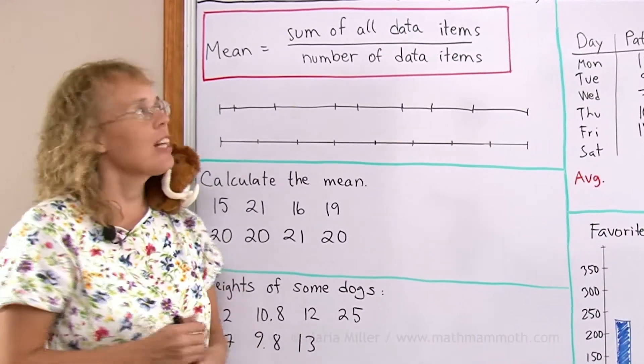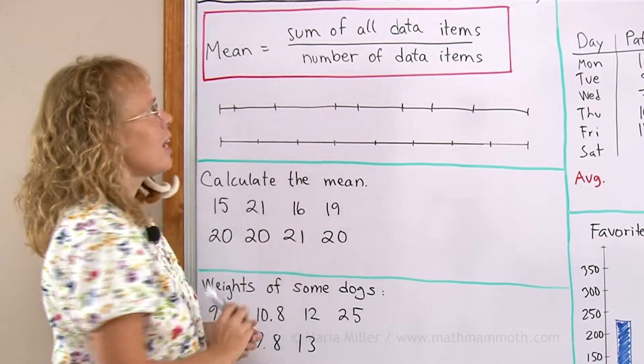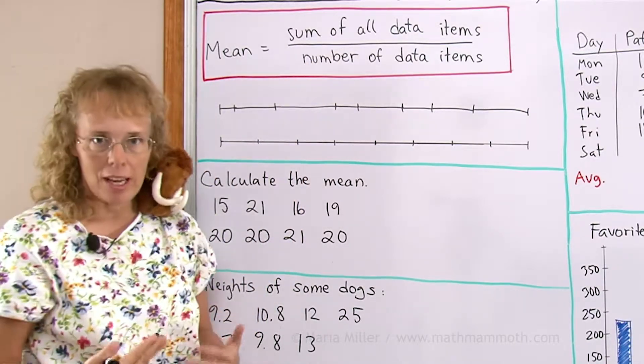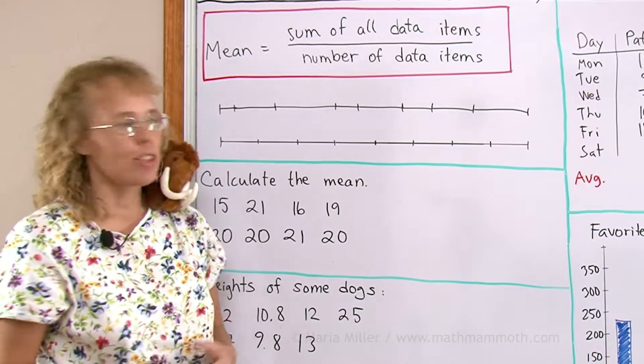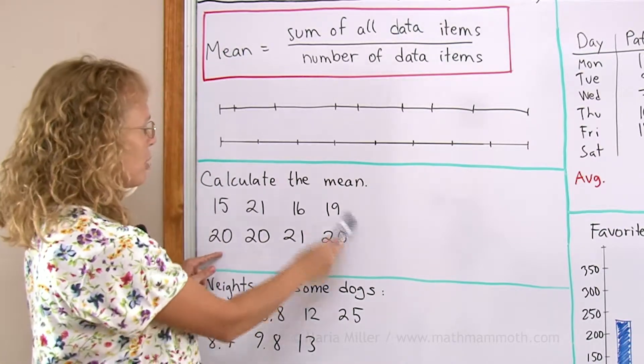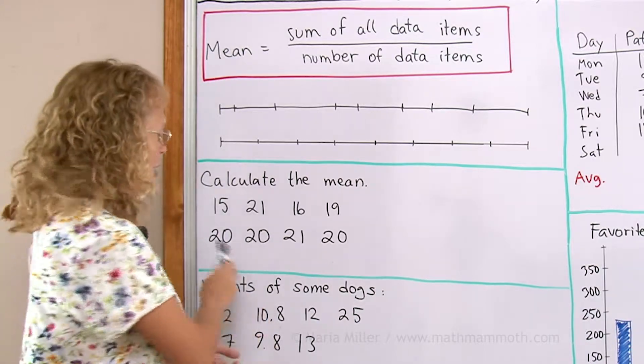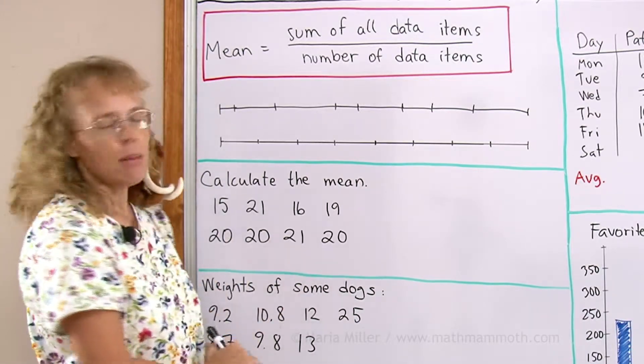Now, the mean is calculated this way. It is the sum of all data items you have divided by however many you have. And you probably already know how to calculate it. For example, here if we have a bunch of numbers we add them all together and then we divide by however many numbers there are. But what does it mean?